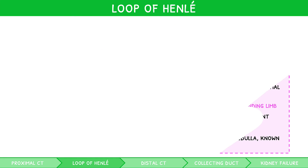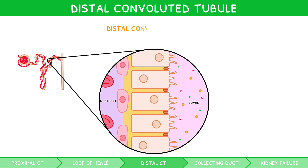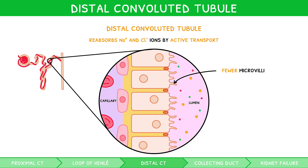Let's move on to the next section, the distal convoluted tubule. You don't need to know much about this section of the nephron. However, like the proximal convoluted tubule, you should know that this twisted section reabsorbs sodium and chloride ions by active transport. To do this, it also contains microvilli and mitochondria, although fewer in number.